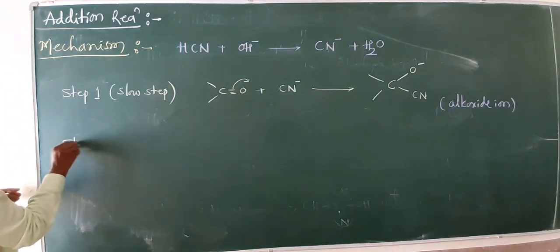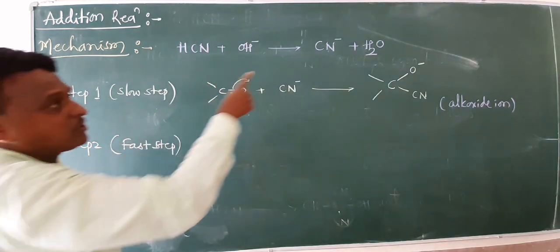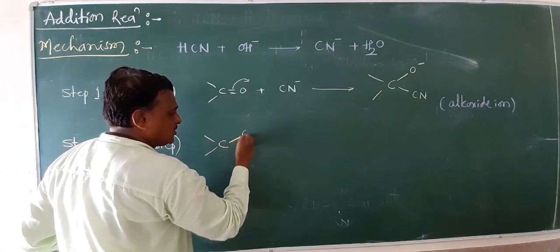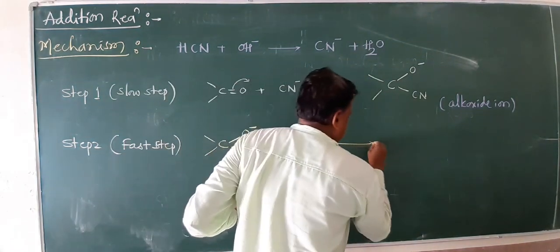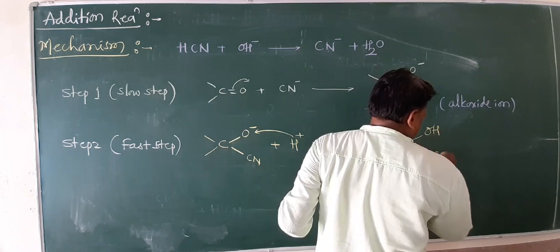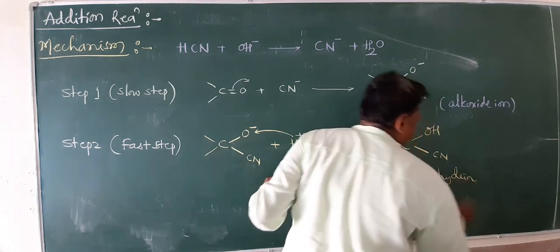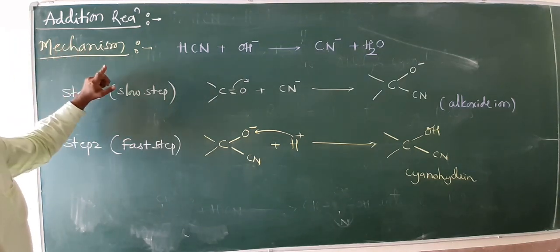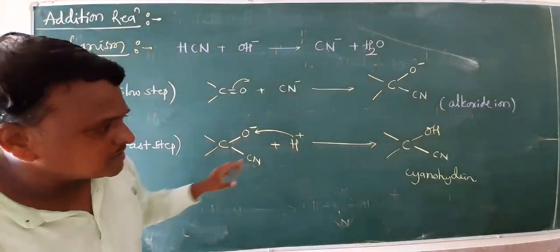In the second step, which is a fast step, H⁺ ion attacks the alkoxide ion. The alkoxide ion, which has O⁻ and CN on the carbon, is attacked by a proton H⁺. The H attaches to the oxygen, and the compound becomes C with OH and CN — the corresponding cyanohydrin, whether from aldehyde or ketone.